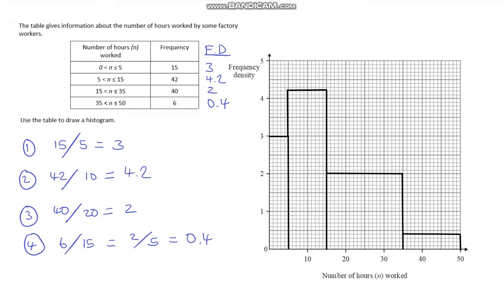Before I finish this video, I just want you to think about, I did mention this in the previous video, about the area of each of these bars. Let's calculate the area of each of these bars. This has a width of 5 and a height of 3. 5 times 3 is 15, and that is our frequency. This one here has a width of 10 and a height of 4.2. 10 times 4.2 gives us 42, and again that is our frequency. Here, from 15 to 35, that's 20. 20 times 2 is 40, and you can see where this is going.